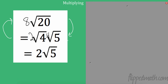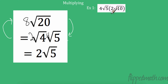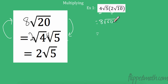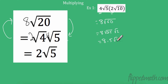Let's try one. I have 4 radical 5 times 2 radical 10. Anything on the outside I multiply together: 4 times 2 is 8. Anything on the inside I multiply: 5 times 10 is 50. We always need to simplify — take out any perfect squares. 50 is 25 times 2, and the square root of 25 is 5, so that's 8 times 5 radical 2, which is 40 radical 2.